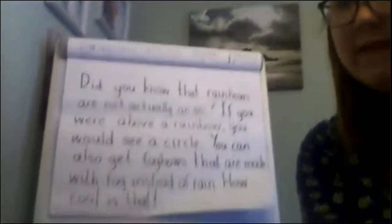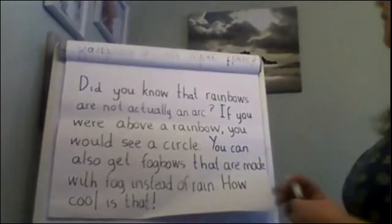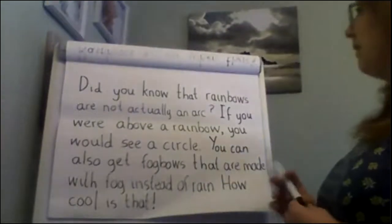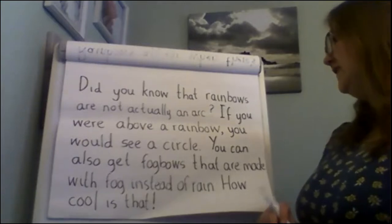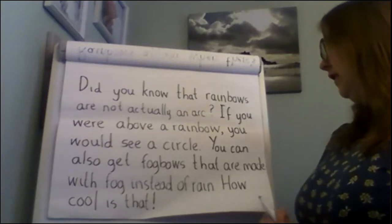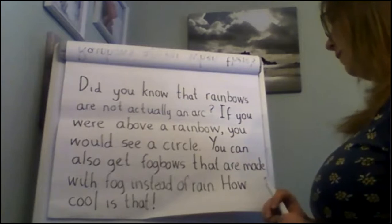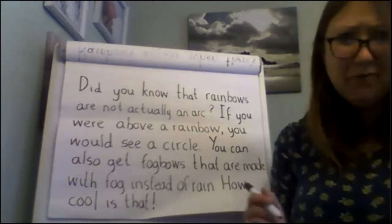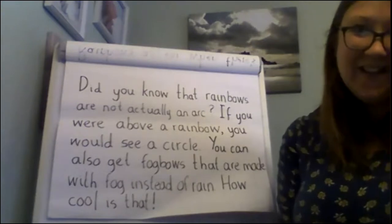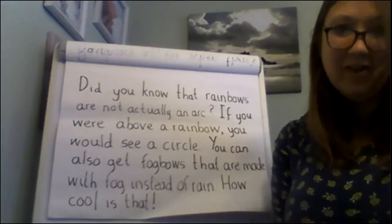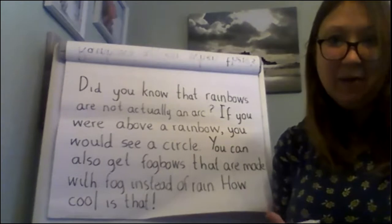Let's read it back through and check that our paragraph makes sense: 'Did you know that rainbows are not actually an arc? If you were above a rainbow, you would see a circle. You can also get fog bows that are made with fog instead of rain. How cool is that?' Now it's your turn to write your second paragraph. Put me on pause and write it now.